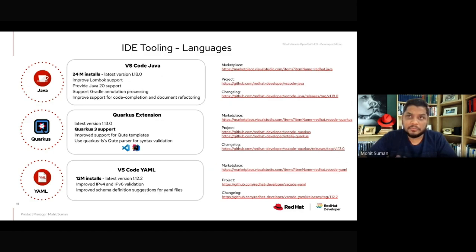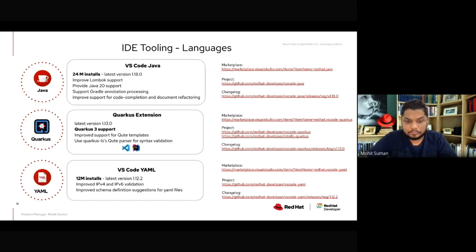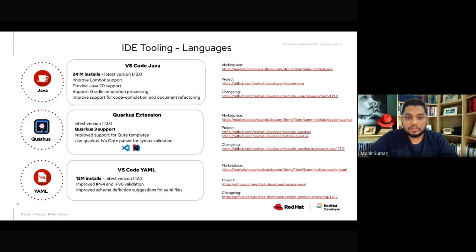For the Quarkus extension, the latest release is 1.13.0. One major improvement is that we now support Quarkus 3 out of the box. For VS Code YAML — which is a dependency for the OpenShift, Kubernetes, Tekton, and Functions extensions — we have approximately 12 million installs. Improvements include improved IPv4 and IPv6 validation, and improved schema definitions and suggestions for specific YAML files. These are the improvements we have done in the space of IDE extensions for both VS Code Java and Eclipse tooling.